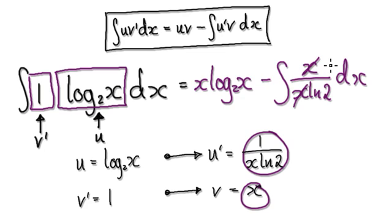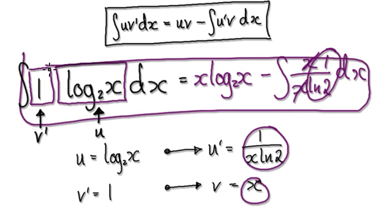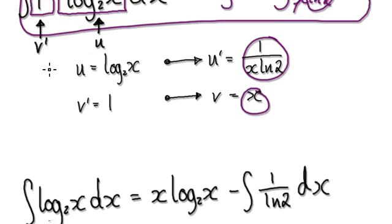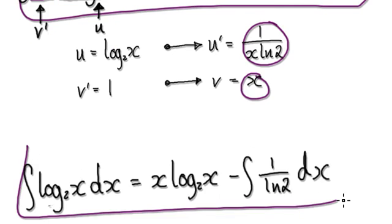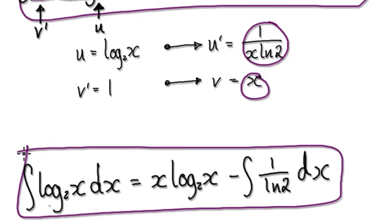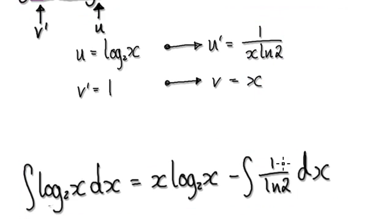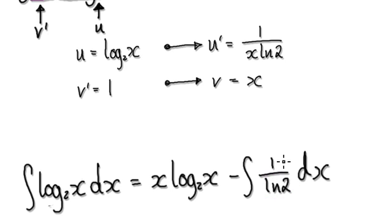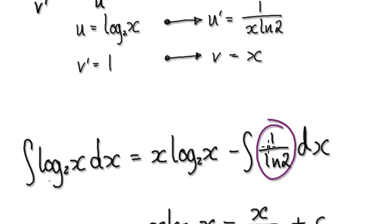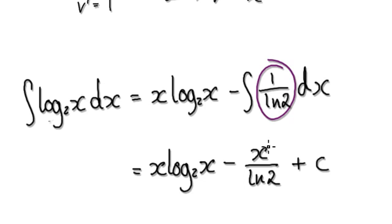So these two x's would cancel out, leaving you with one over natural log of 2. This whole thing here would then become this. And then now this here is just a constant — natural log of 2 is just a number, it's just a constant. So when you integrate this, it will give you this.